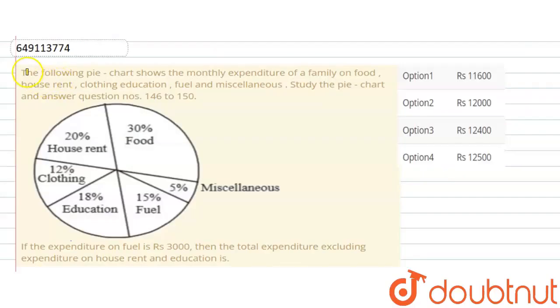Welcome to Doubtnut. Our question is: The following pie chart shows the monthly expenditure of a family on food, house rent, clothing, education, fuel and miscellaneous. Study the pie chart and answer the question.